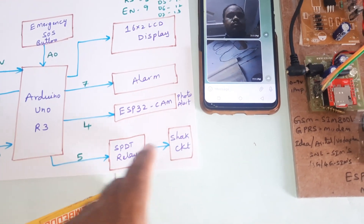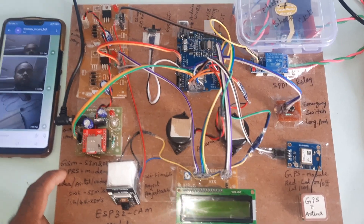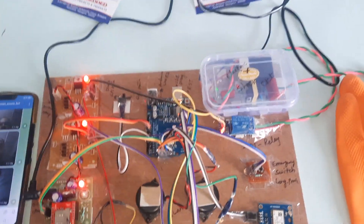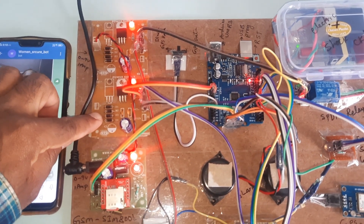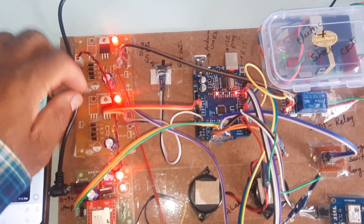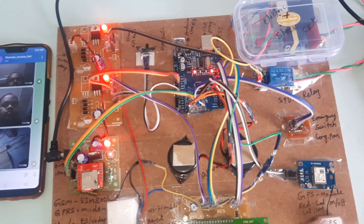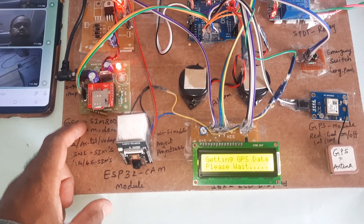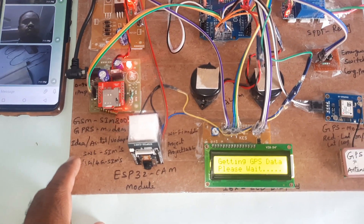We are also using an SPDT relay and shock circuit. For the hardware, we use a bridge rectifier, filter capacitor, 7805 voltage regulator, and one LED. We are using two power supply sources for all components. For the GSM SIM800L, you can use Idea, Airtel, Vodafone, or BSNL SIM cards.